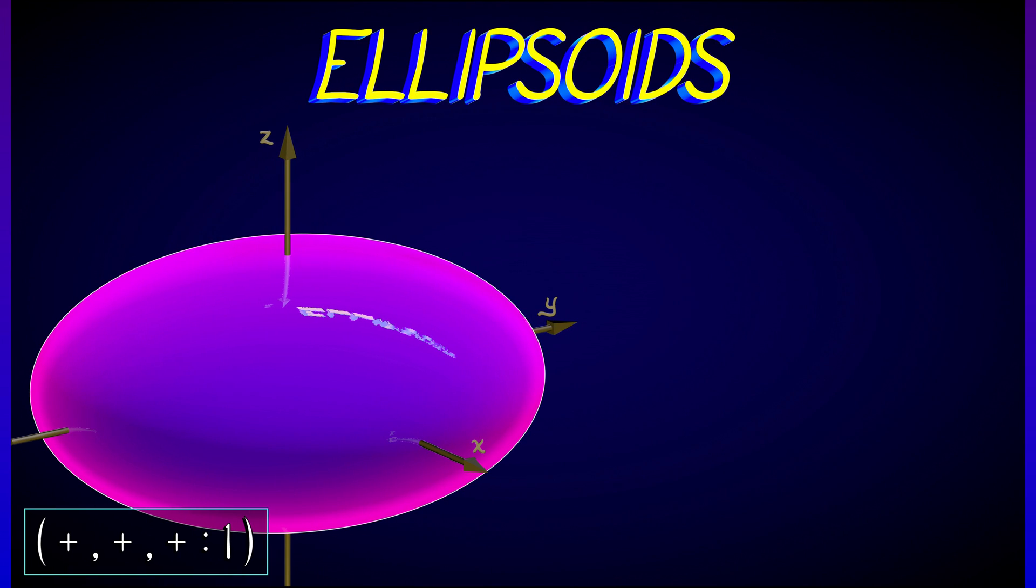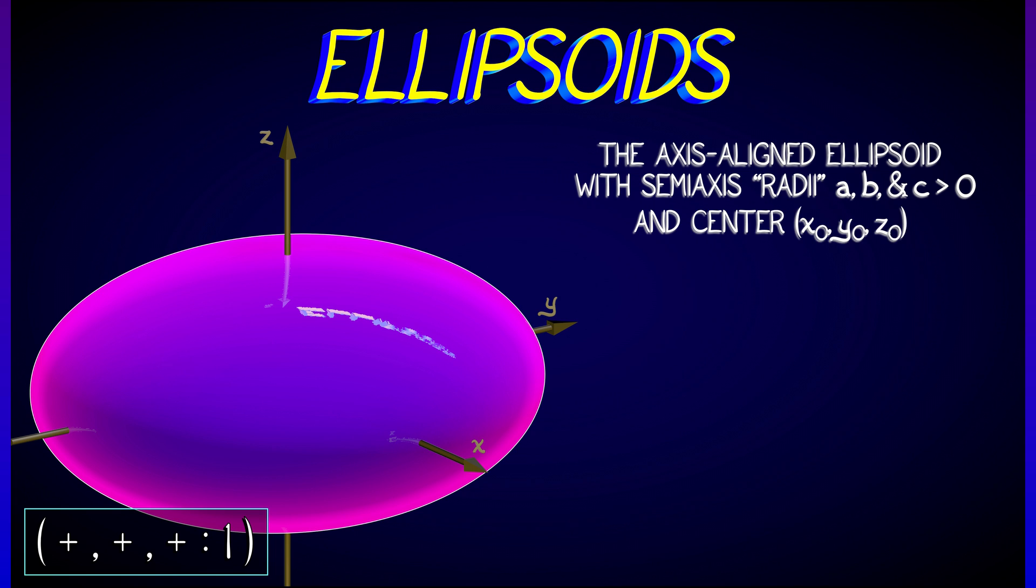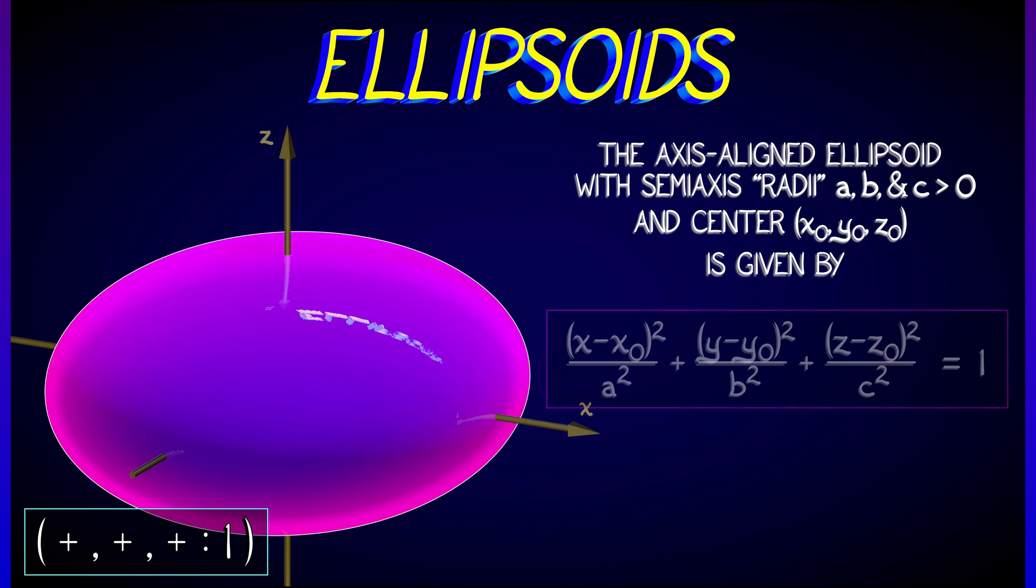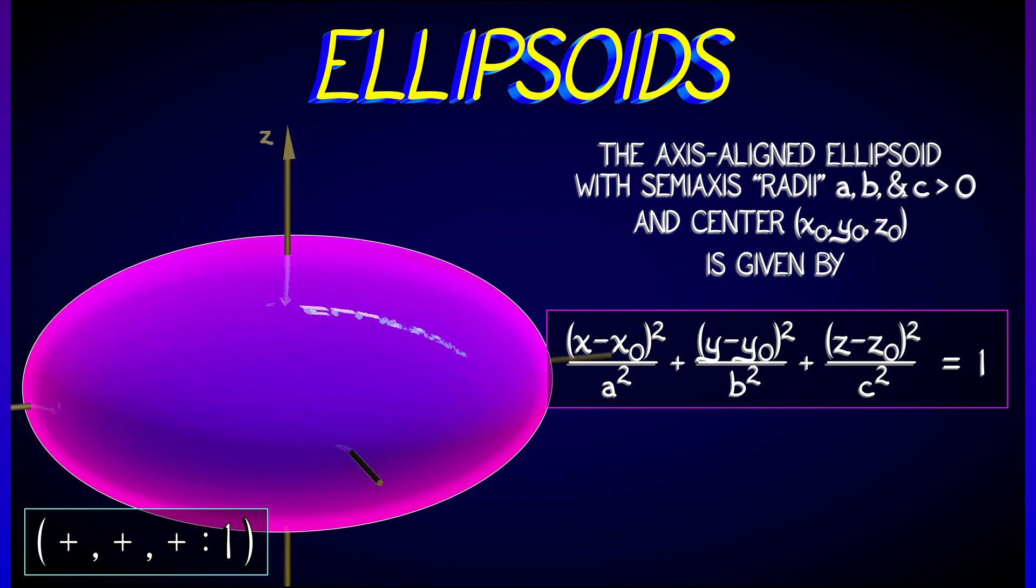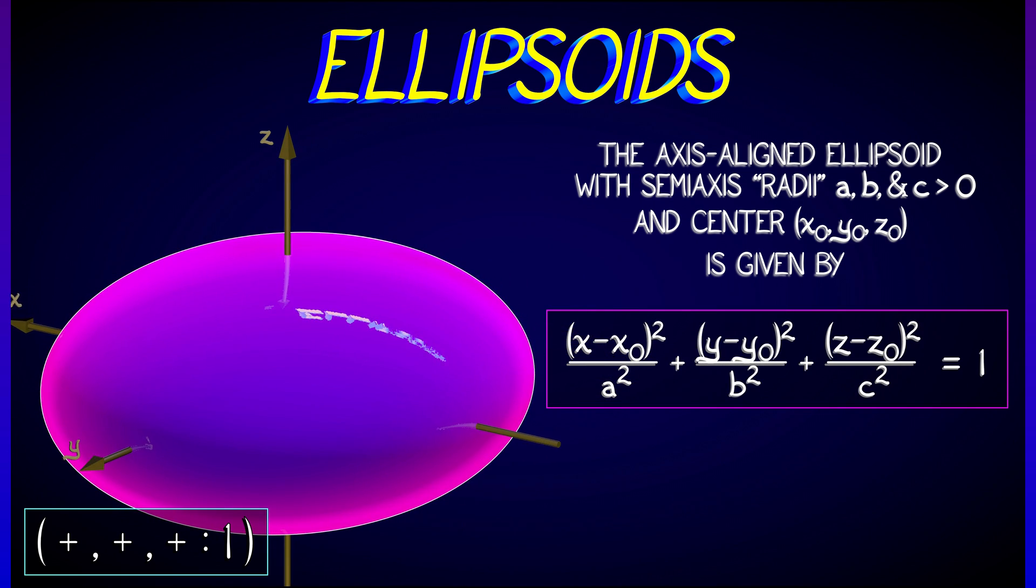So the first thing that we could consider is changing the r² to have different values depending on whether you're below the x or y or z term. And this yields an ellipsoid, where these constants a, b, and c are called semi-axes radii. And they tell you how this ellipsoid is stretched or squashed along the three different axes.